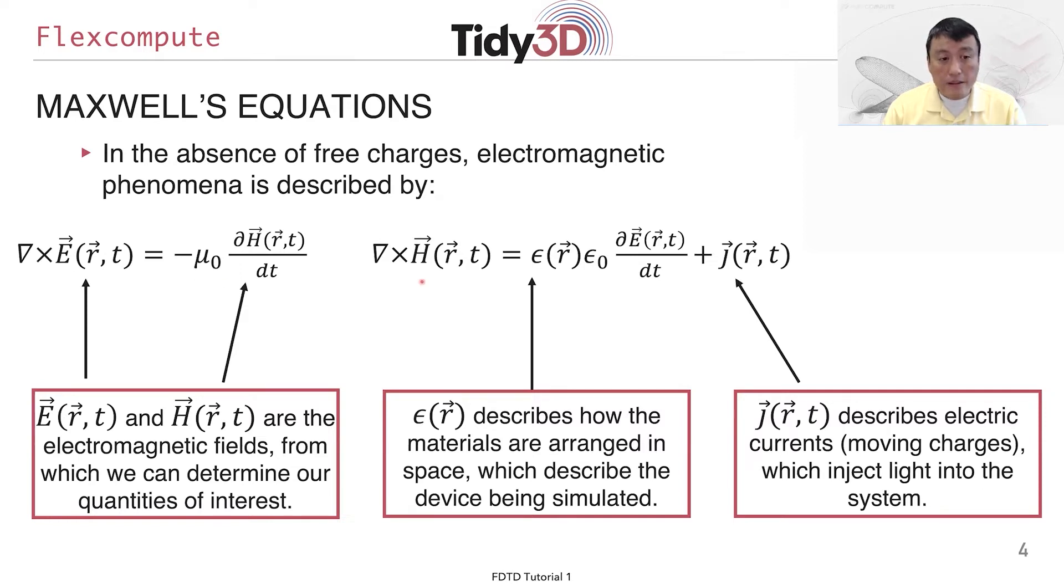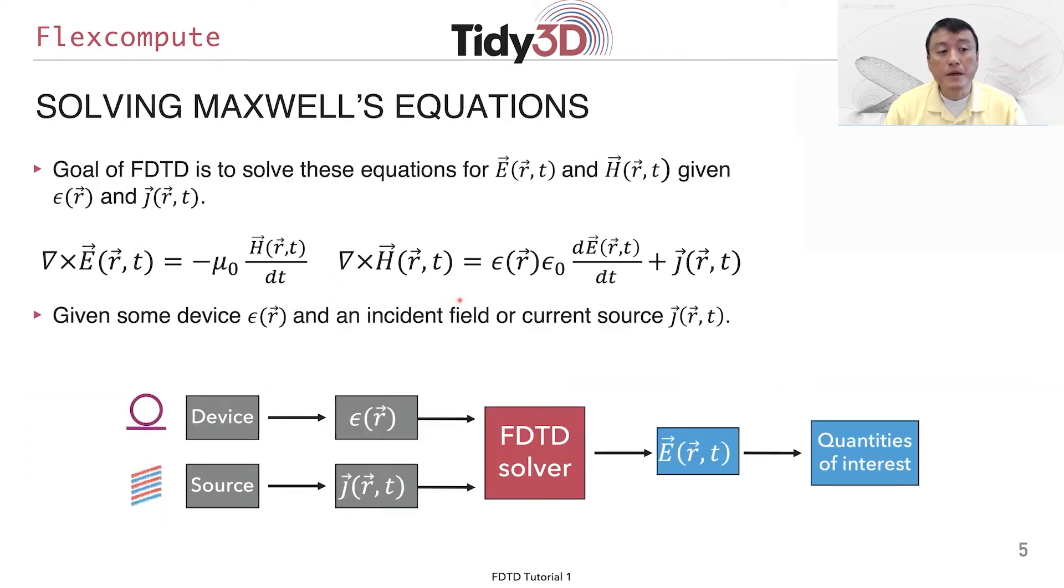And so the dynamics is the E and H field in a structure as described by a permittivity distribution epsilon r here. The structure is then excited by a current source, usually a time-oscillating current. This equation is a time domain equation that describes the evolution of electric and magnetic field as a function of time. And so FDTD method, the TD stands for time domain, so it's exactly a time domain method that allows you to directly compute such time evolution.